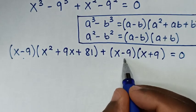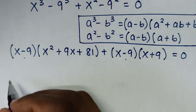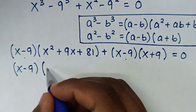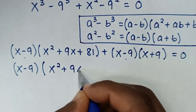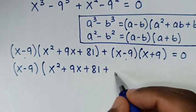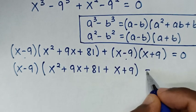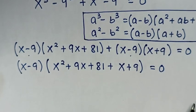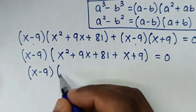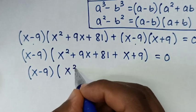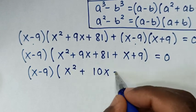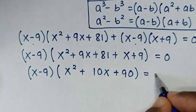From our equation, (x - 9) is common, so we factor it out: (x - 9)[(x² + 9x + 81) + (x + 9)] = 0. Combining like terms inside: x² + 10x + 90, so the equation becomes (x - 9)(x² + 10x + 90) = 0.